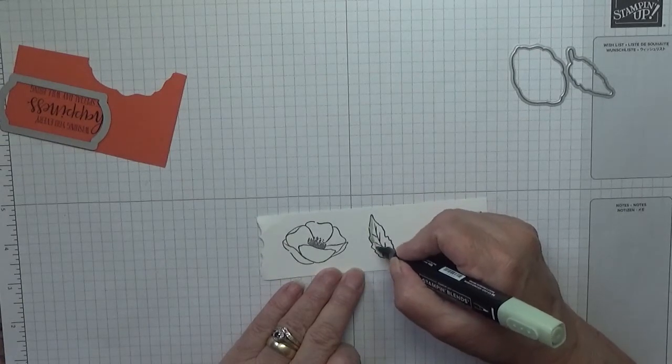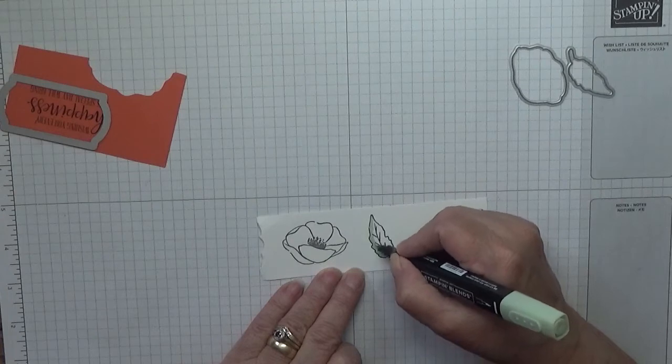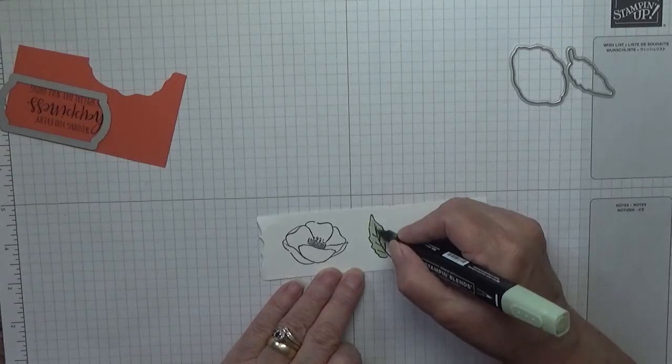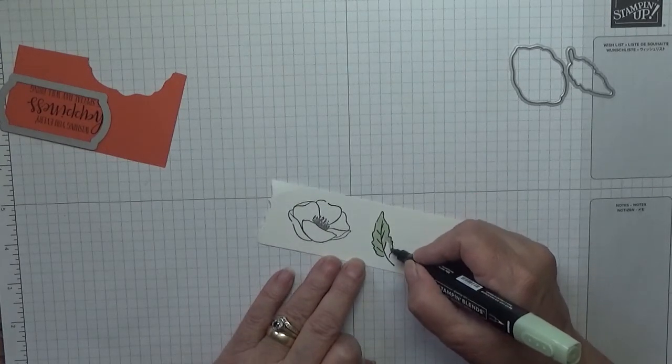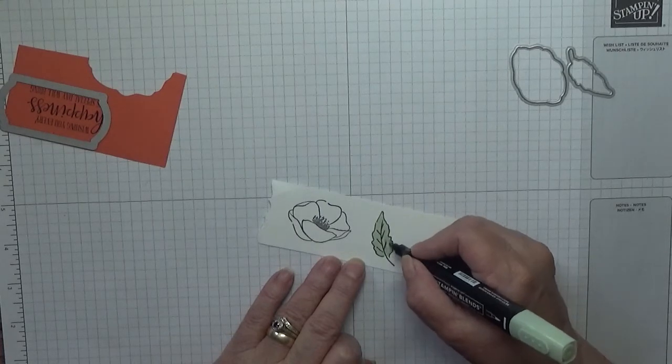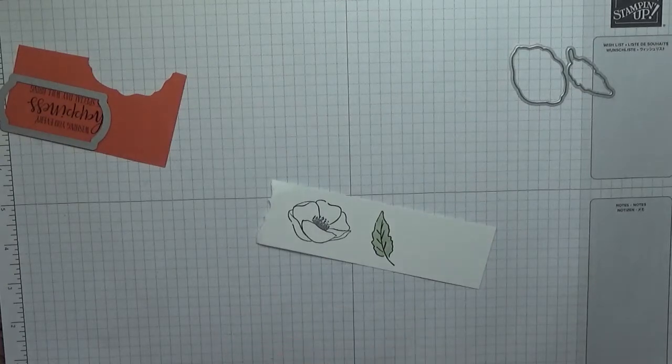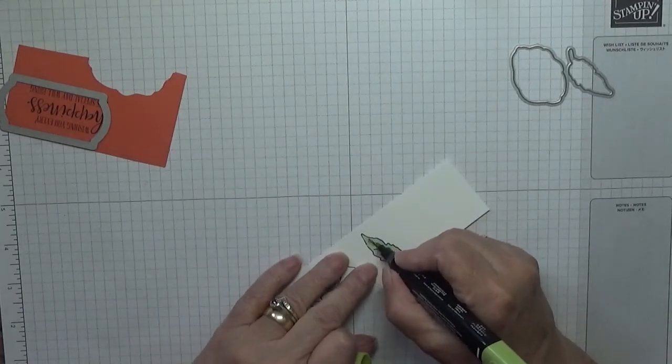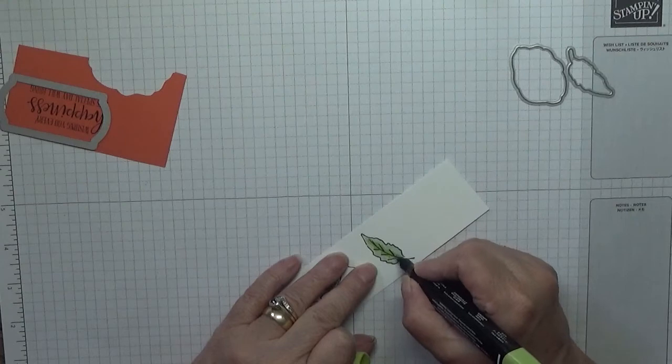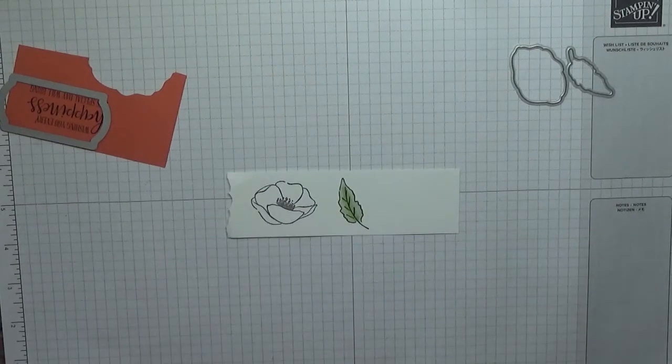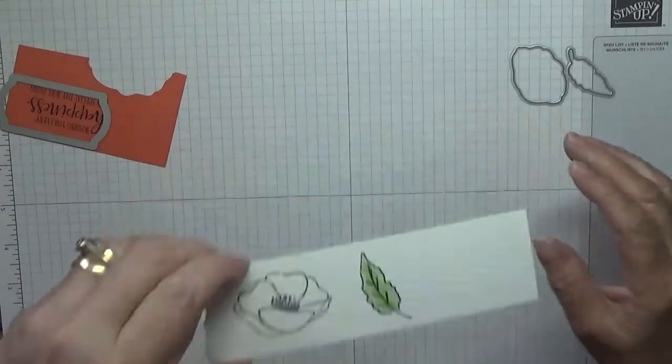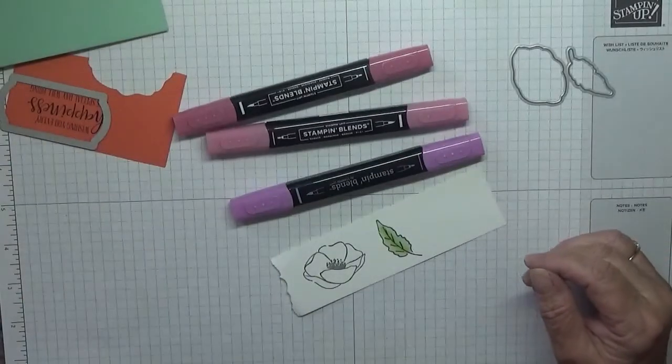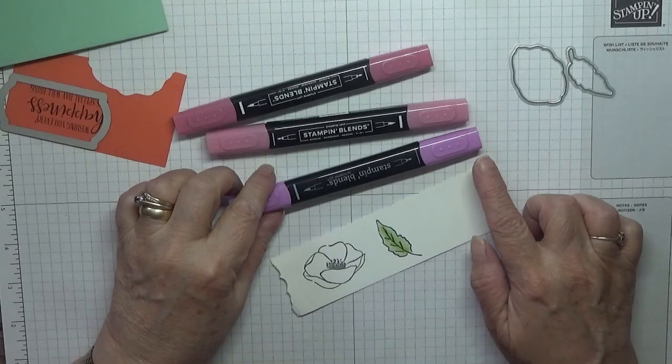So what I've done is color this in in Soft Sea Foam, and then I went down the middle of the leaf with Granny Apple Green Light, and just went down the stem, made it a little bit darker.